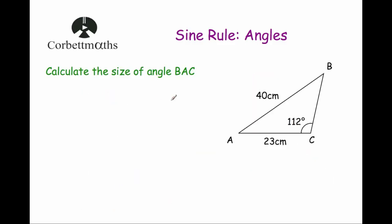Let's have a look at another example. Our next question says: calculate the size of angle BAC. We've got triangle ABC and we want angle BAC, which is theta here. Interestingly, I don't know the length of the side opposite it, and you can only use the sine rule if you know the angle and the side opposite it. So instead I'm going to find angle ABC — let's call it Y — and then use Y plus 112 degrees, take those away from 180, to work out theta.